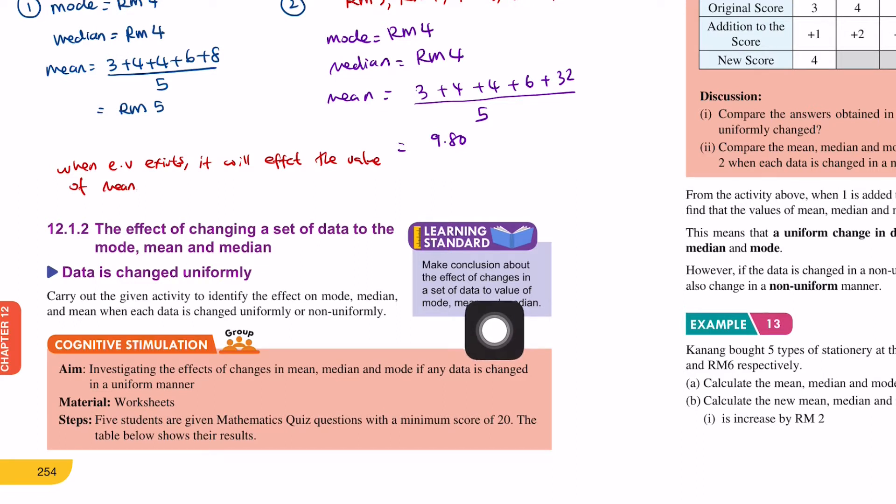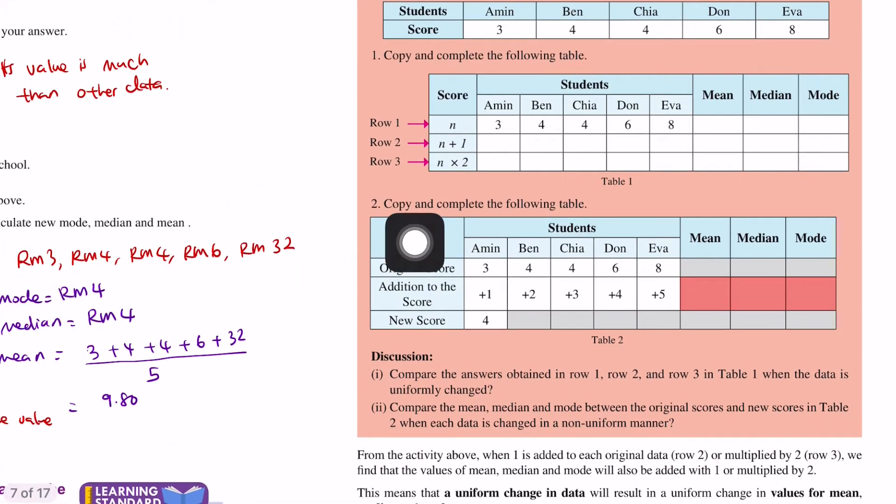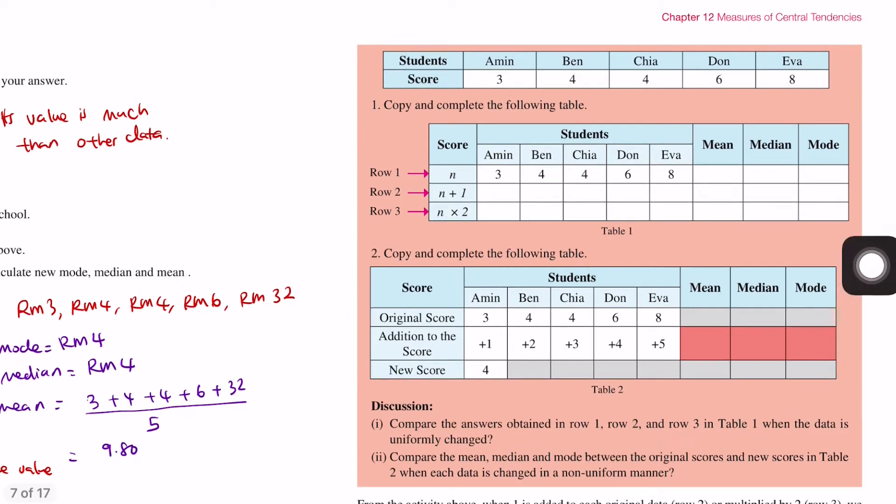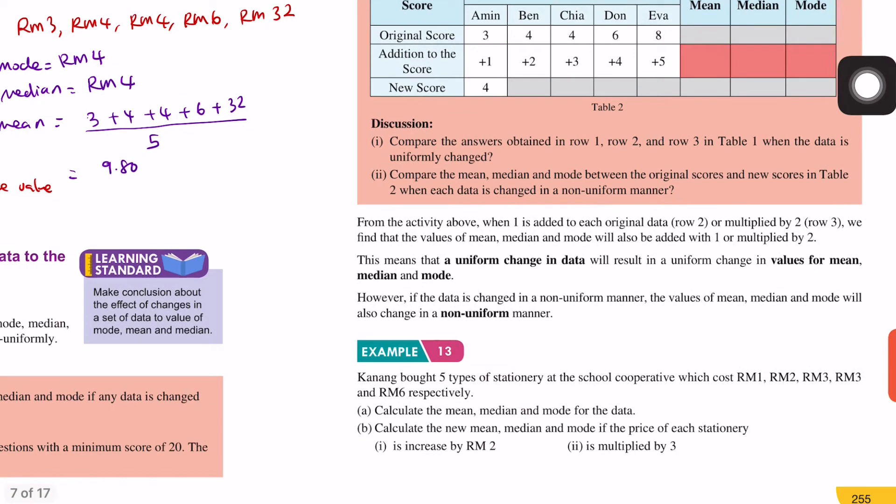The first one: data is changed uniformly. A uniform change in data will result in a uniform change in values for mean, median, and mode. However, if the data is changed in a non-uniform manner, the values of mean, median, and mode will also change in a non-uniform manner. For example, if we add 4 to all data, that's uniform. But if we add 3, then 2, then 5, then 7, the changes are non-uniform.